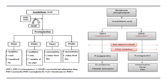Now, regarding the mechanism of action of NSAIDs: from membrane phospholipids, phospholipase A2 produces arachidonic acid. Arachidonic acid, via the cyclooxygenase enzyme — either COX-1 or COX-2 — forms prostaglandins. These include prostaglandin I2, prostaglandin E2, thromboxane A2, and prostaglandin H2.